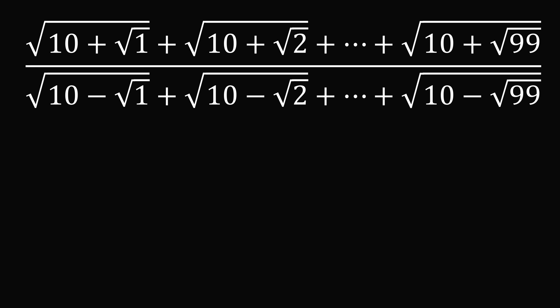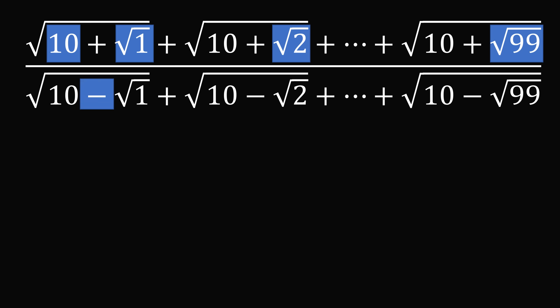So how can we solve this problem? Let's look for a pattern in the numerator and the denominator. In the numerator, we have the square root of 10 plus the square root of 1, then the square root of 10 plus the square root of 2, and so on, until we add the square root of 10 plus the square root of 99. We can write the numerator in general terms as a_n, equal to the sum from k equals 1 to n squared minus 1 of the square root of n plus the square root of k.